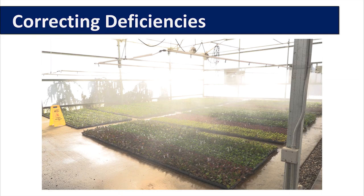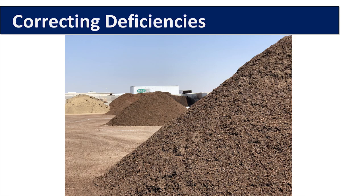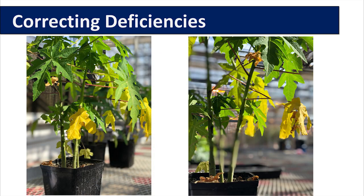Also check water quality parameters such as salinity and pH. Check your rooting medium to make sure you do not have a high carbon to nitrogen ratio, meaning nitrogen is being used by microorganisms to break down carbon sources in the media, which can cause nitrogen deficiency for the plant.